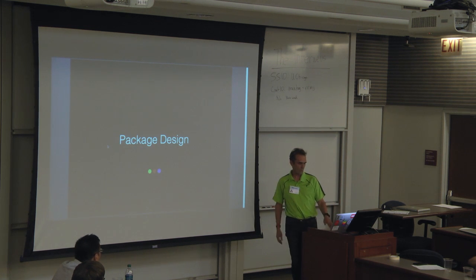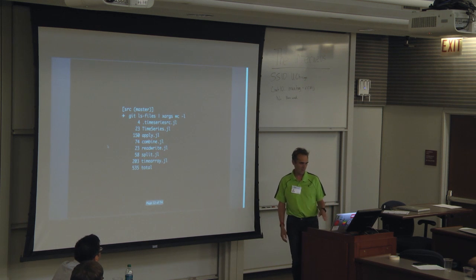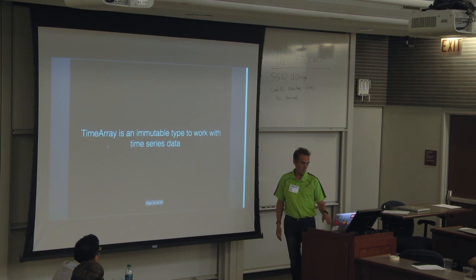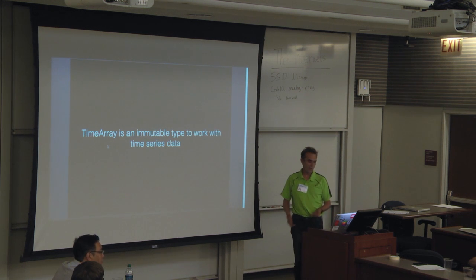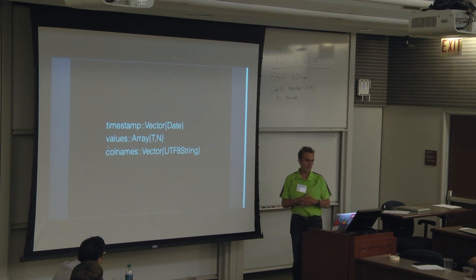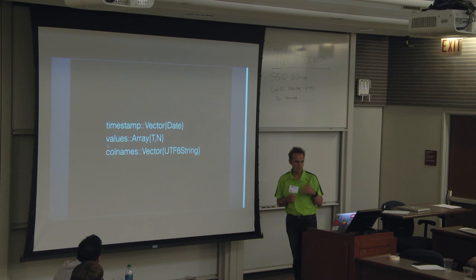Just to go over quickly what the package design is, it's kind of a sticky code base. It's only got 500 lines of code, and this actually includes the empty lines as well. It's based around a TimeArray, which is an immutable type to work with time series data. It includes three elements: timestamp, which is a vector of dates. It's gone through a few permutations, but dates is dates.jl which is eventually going to make it to base, I guess.